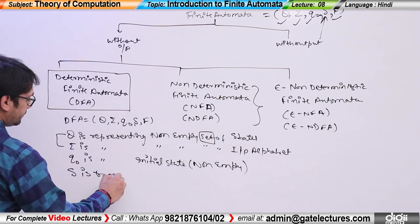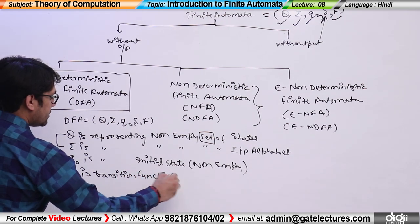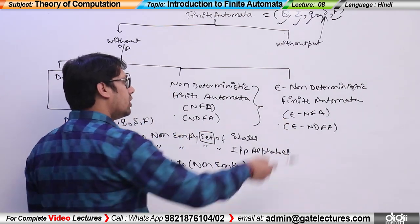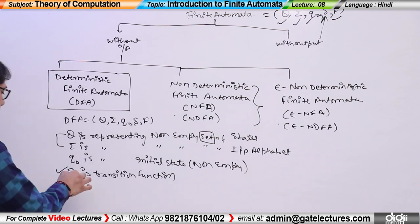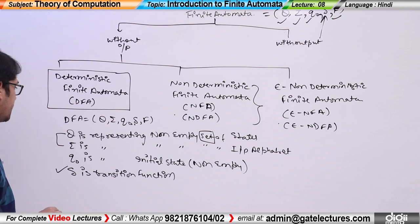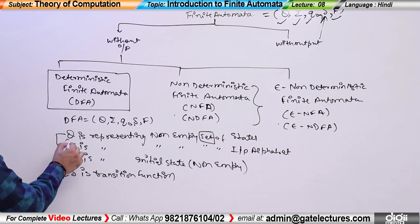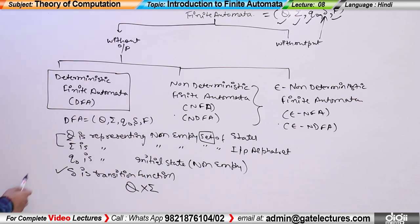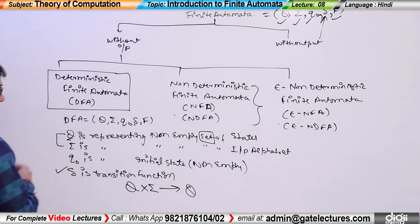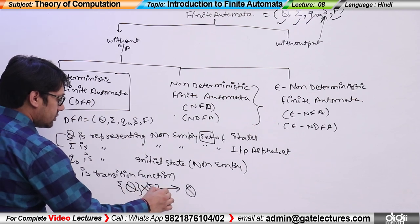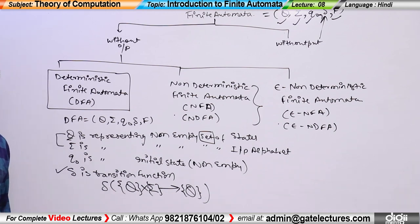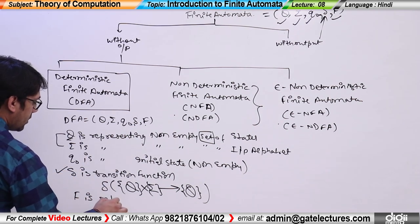Delta is the transition function. This transition function's definition changes for deterministic finite automata, non-deterministic finite automata, epsilon non-deterministic finite automata, and machines with output. Otherwise the other definitions remain the same. Now here, what delta says is: if you are on a particular state q and you see any input symbol, we will give you a transition to another state which will be from within the same set of states. And F is the set of final states.